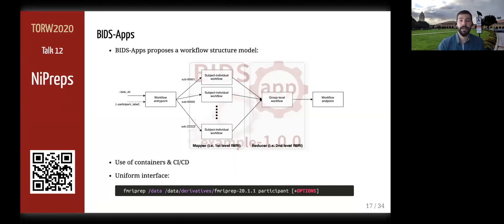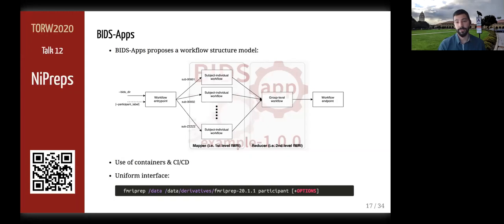All end-user applications in NIPREPs must conform to the BIDS apps specifications. The BIDS apps paper identified a common pattern in neuroimaging studies where individual participants and runs are processed first individually, and then further levels of data aggregation are executed. For this reason, BIDS apps define two major levels of execution: participant and group levels. The paper also stresses the importance of containerizing applications to ensure long-term preservation of run-to-run predictability, and proposes a common command line interface: the name of the BIDS app (e.g., fMRIPREP), followed by input and output directories, and finally the analysis level — always 'participant' for fMRIPREP.